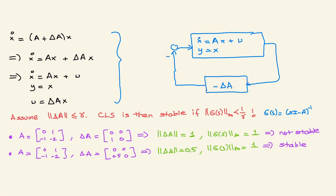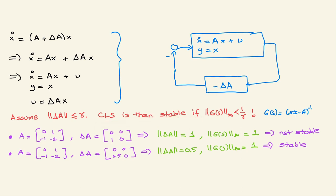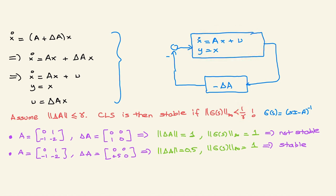Assume the perturbations in ΔA are upper bounded by gamma. By the small gain theorem, the closed-loop system is stable if the H-infinity norm of the transfer function G(s) = (sI − A)⁻¹ is strictly less than 1/gamma — since B and C are both identity matrices.